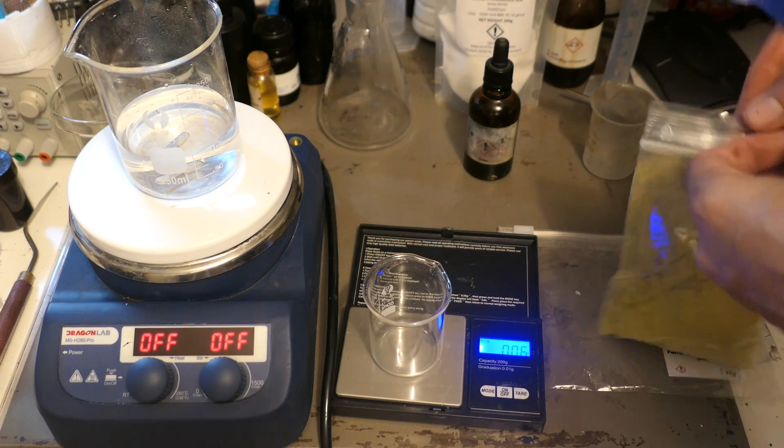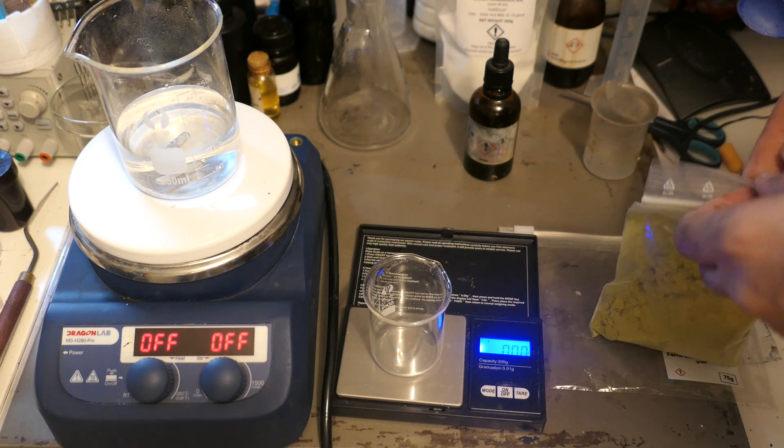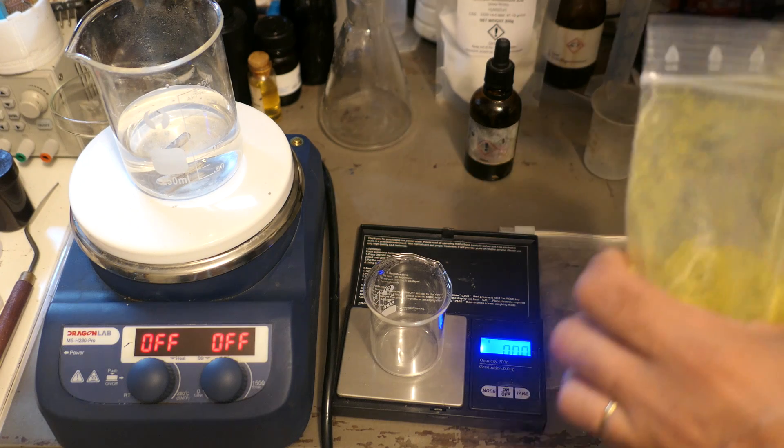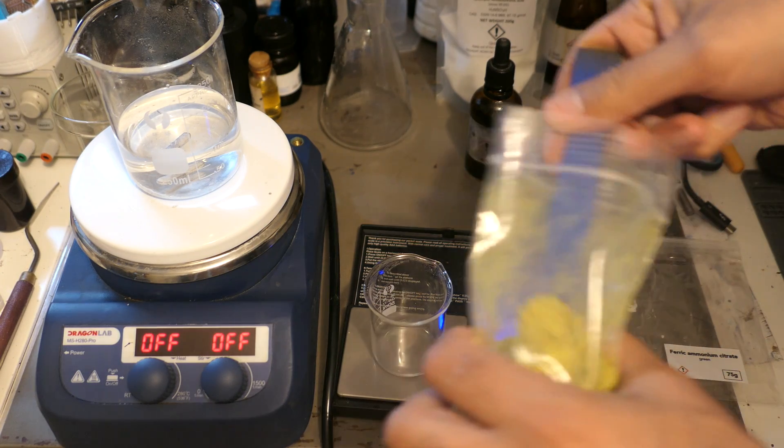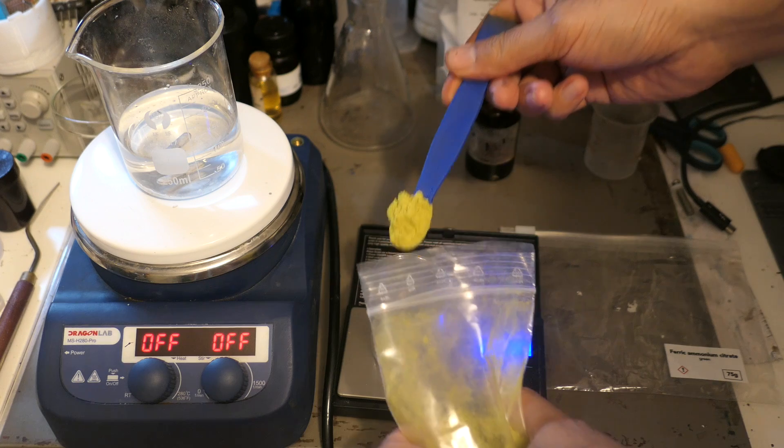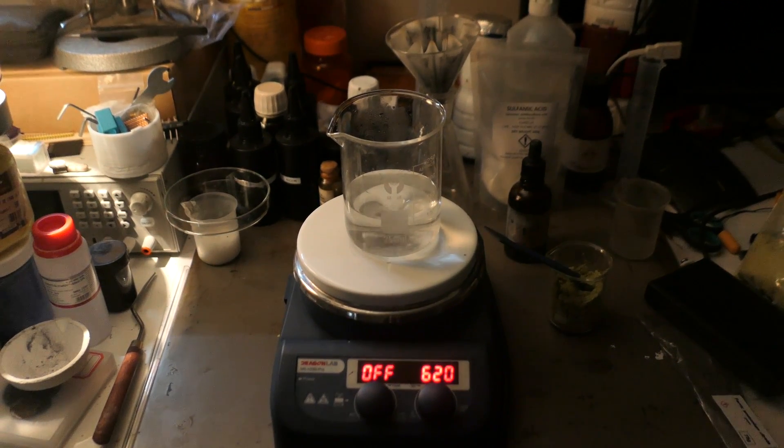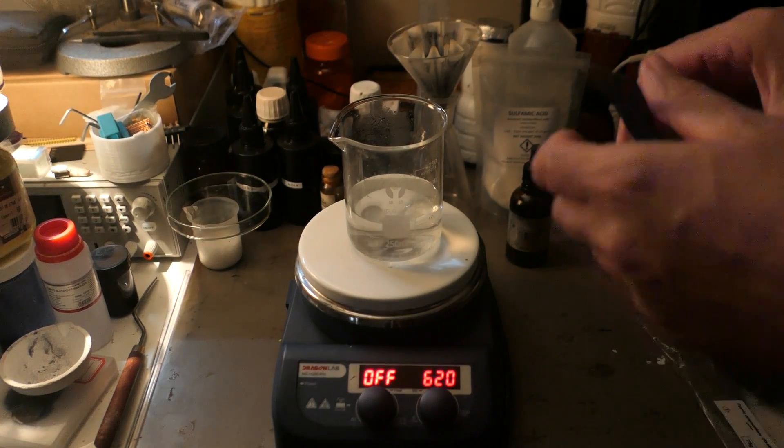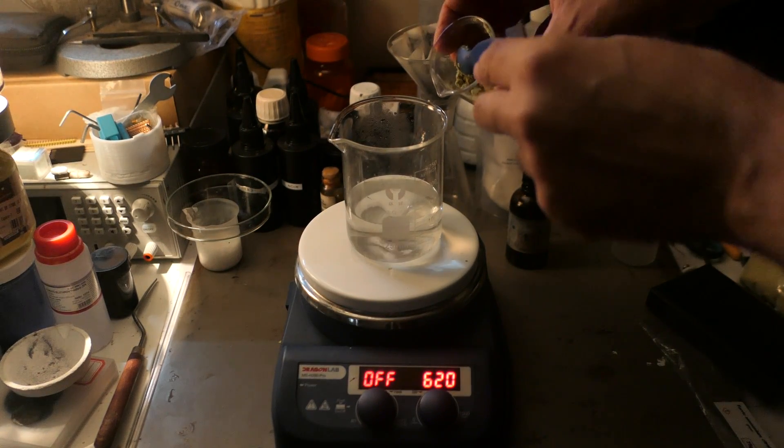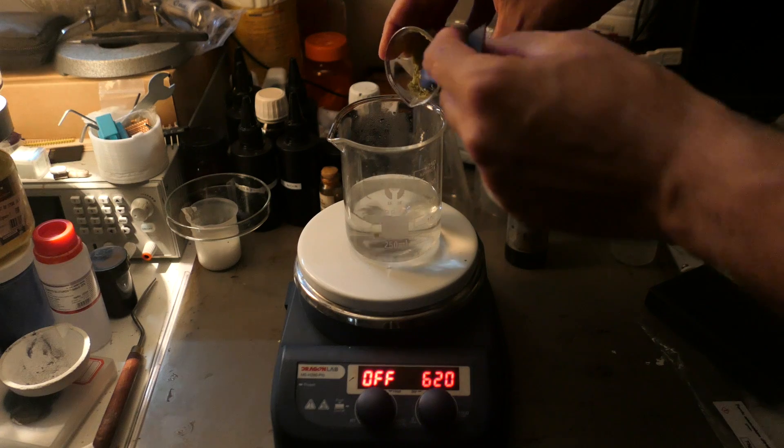Prepare 24 grams of ammonium iron 3 citrate. This is a green powder. We'll now limit exposure to light using either an incandescent lamp or a red light. Pour it into the silver sulfonate solution. If necessary, add 20 to 30 milliliters of water to the solution.